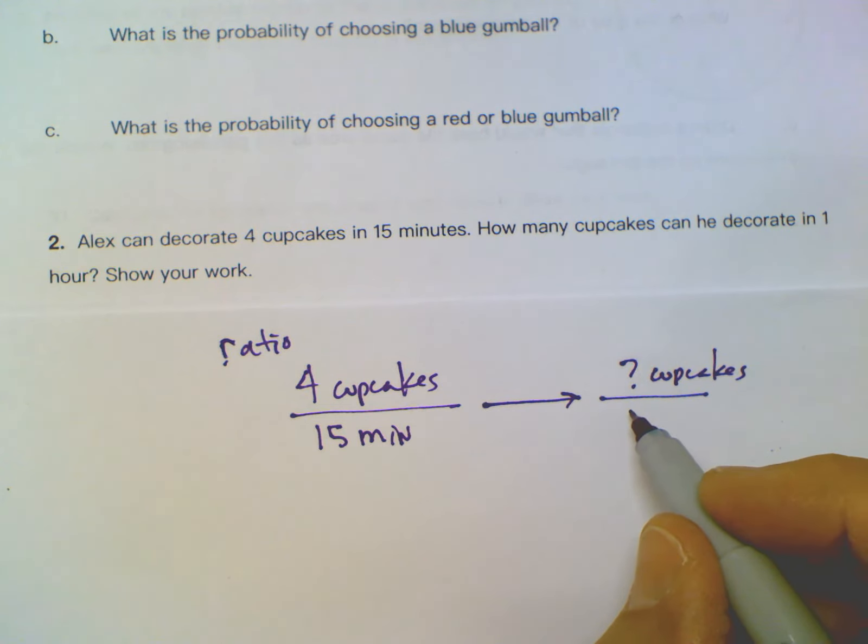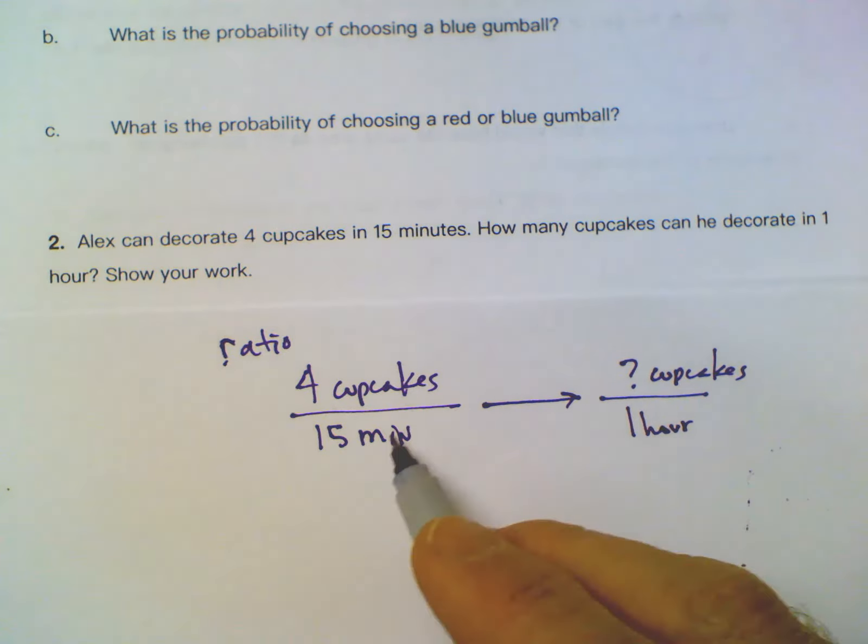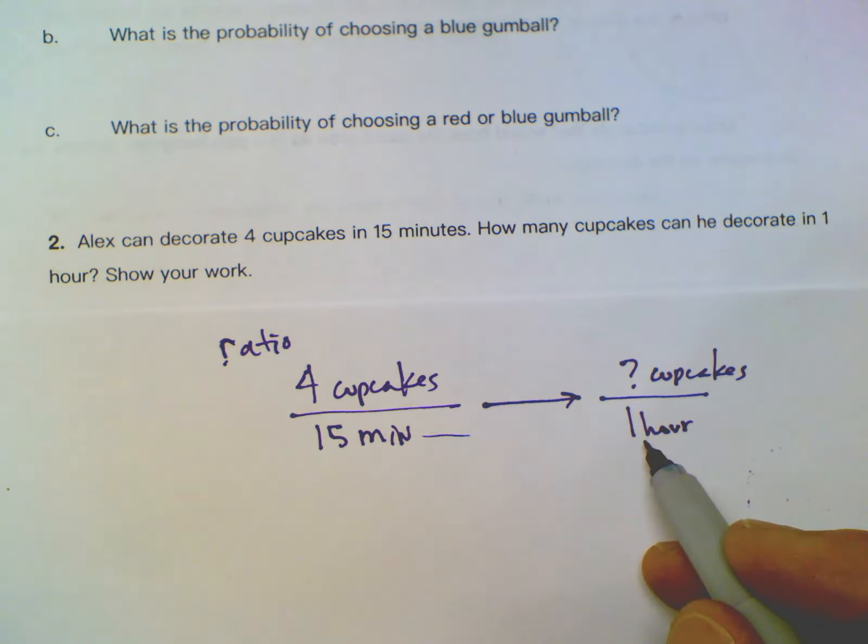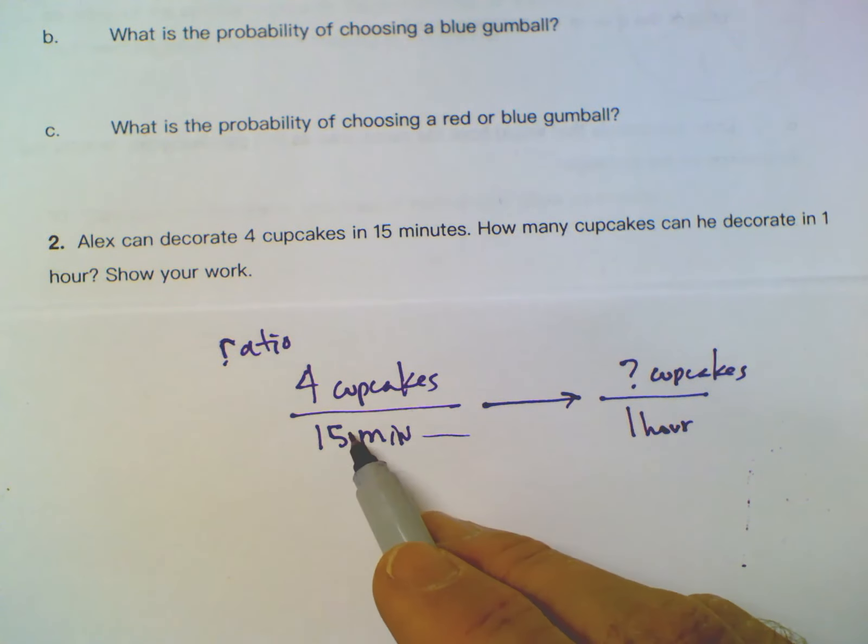So number 2, we have a situation where we're given the fact that Alex can decorate four cupcakes in 15 minutes. So I know I can set up a ratio, I could set up a ratio for this problem.